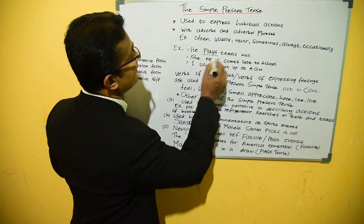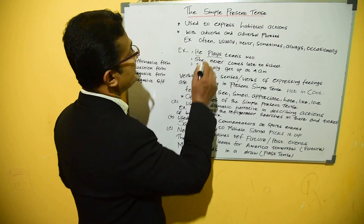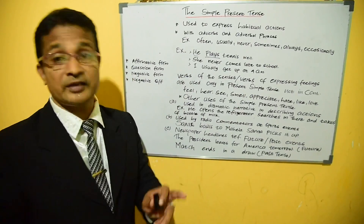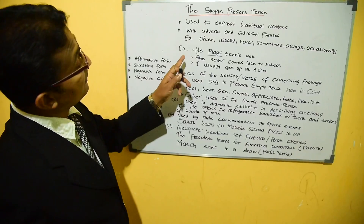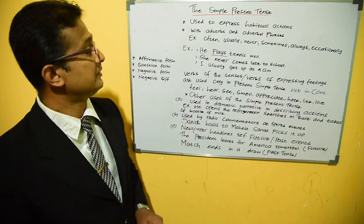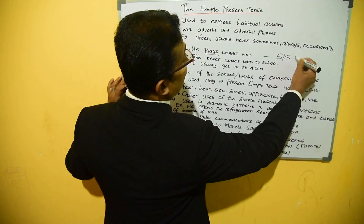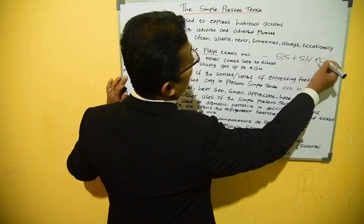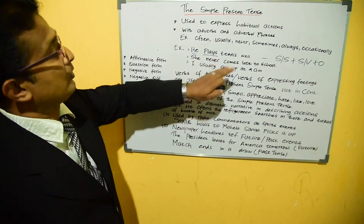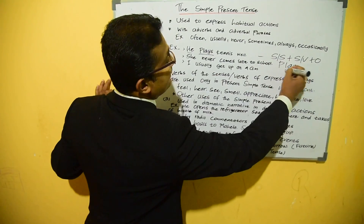He plays tennis well. I've used three subject pronouns here. Number one: he. This is of course a singular subject pronoun. As we have used a singular subject pronoun, we need to use a singular verb. The structure is: singular subject plus singular verb plus object. So depending on that structure, we need to follow this sentence. The verb 'play' is an infinitive, but I have just added the letter S here.